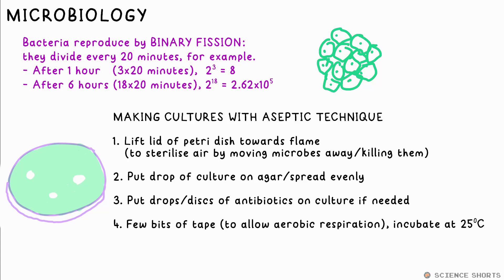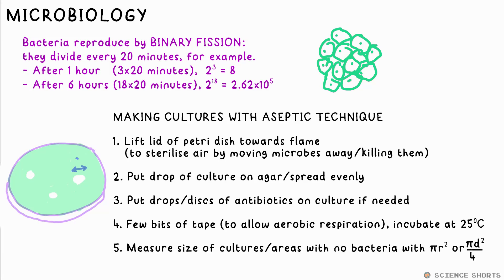We put a few bits of tape around the dish to hold the lid on, but not all the way round, otherwise air won't get in and the bacteria will respire anaerobically — we don't want that. We incubate it at 25 degrees for a couple of days. Once the culture has grown, we can calculate the size of the culture from an initial drop, or the area in which bacteria did not grow or were killed by an antibiotic, to then compare with others. In both cases, we use πr² or πd²/4 to calculate the area of these circles.